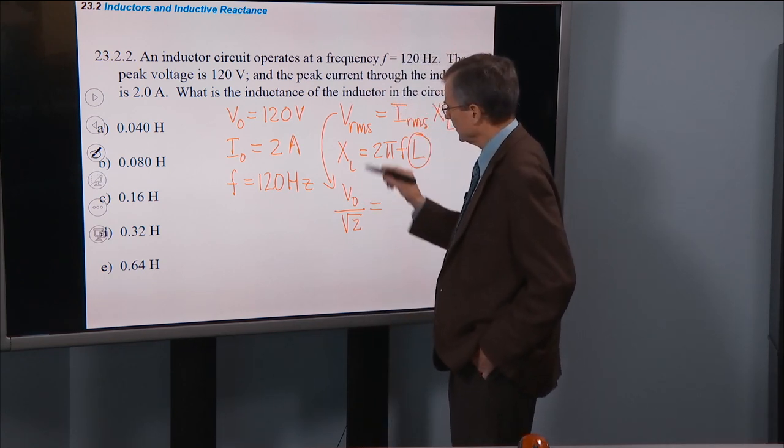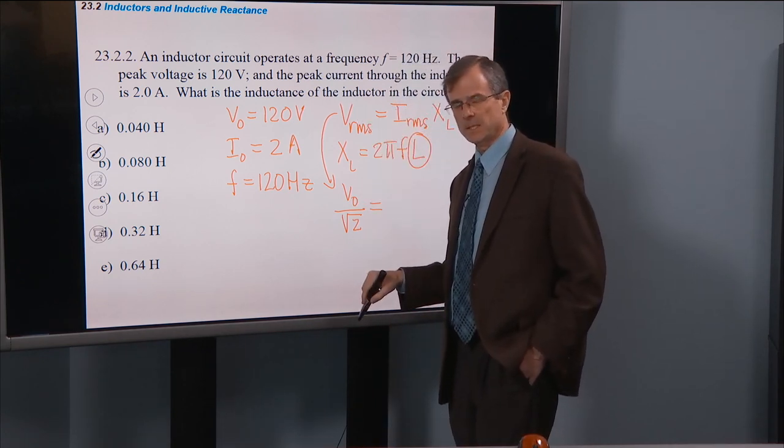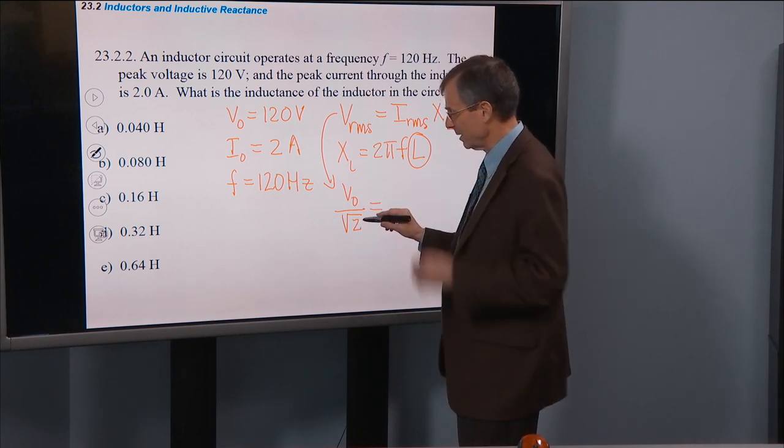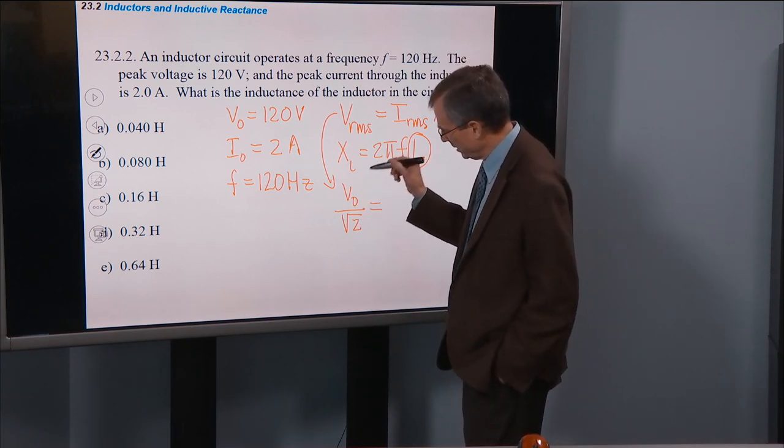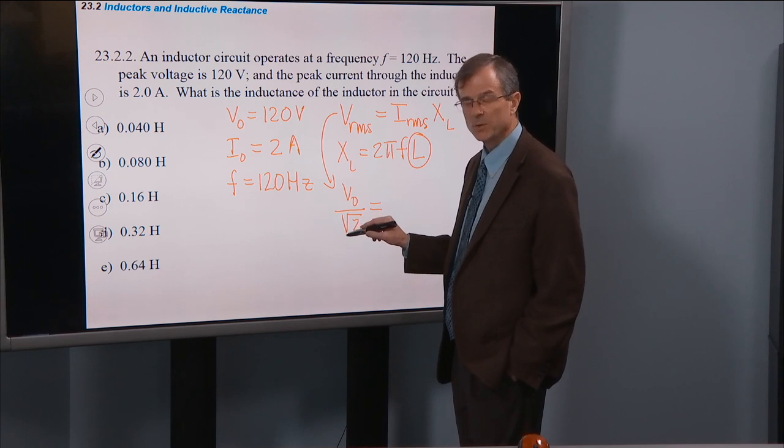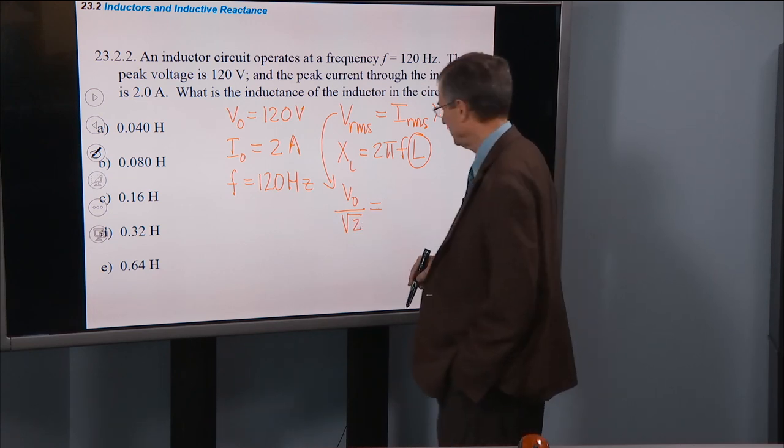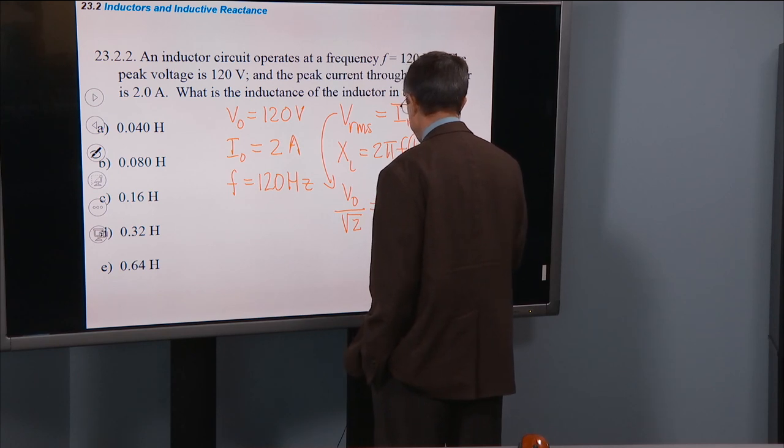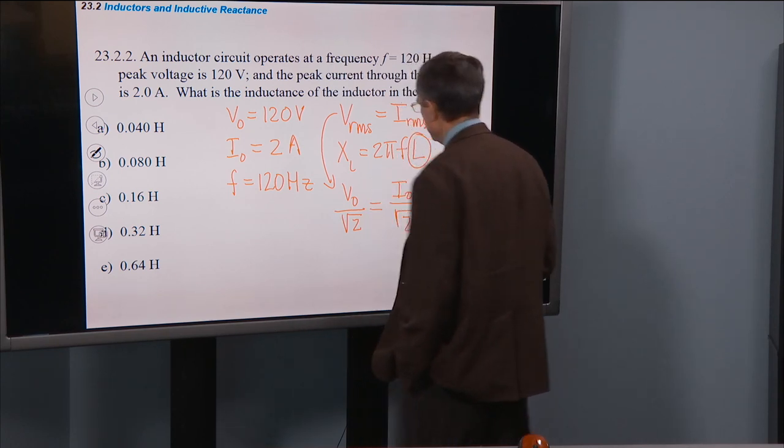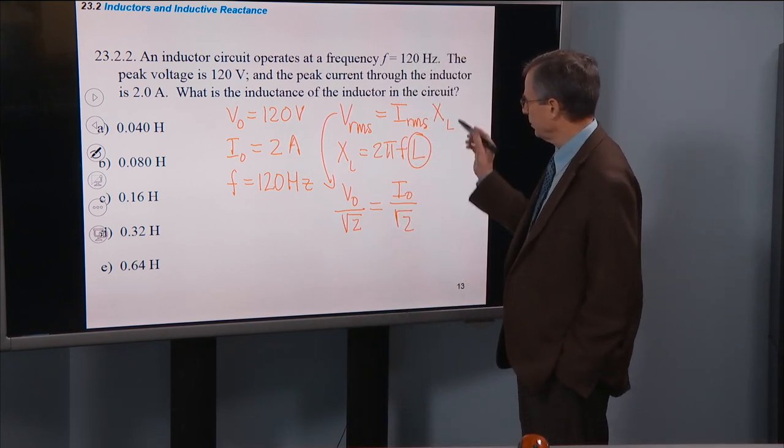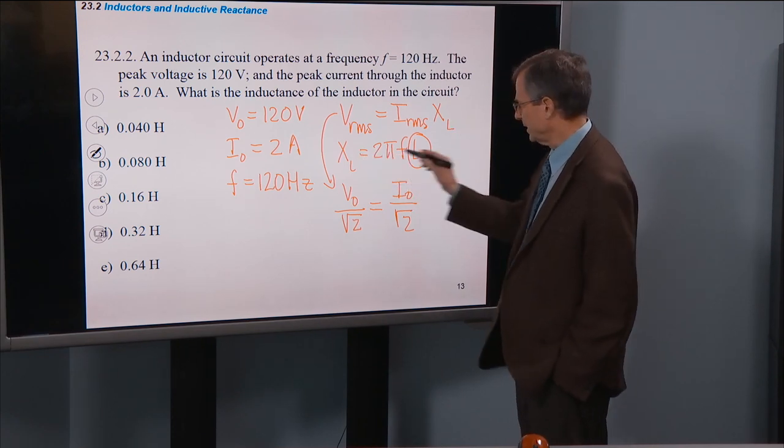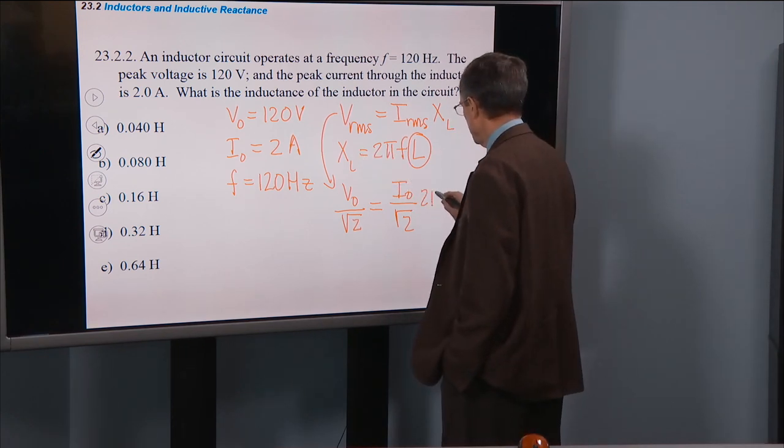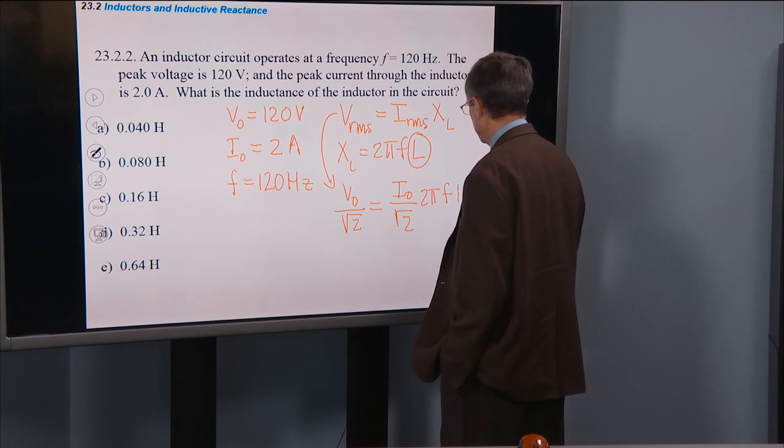So remember, the RMS voltage is less than the peak voltage. And the square root of 2 is a number that's bigger than 1, so you take the peak voltage and divide by a number that's bigger than 1, you'll get something that's less than the peak voltage. It is I_0 over the square root of 2 times X_L. And let's go ahead and plug in what X_L is here. We've got that equation right here, 2πfL.